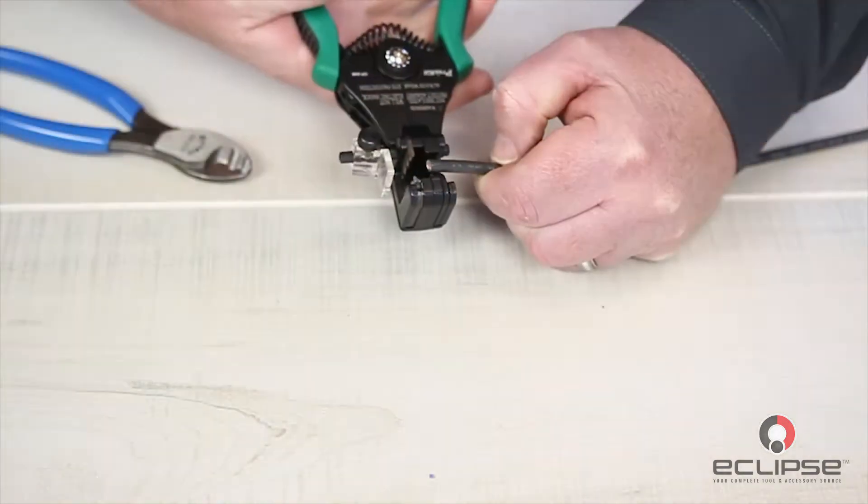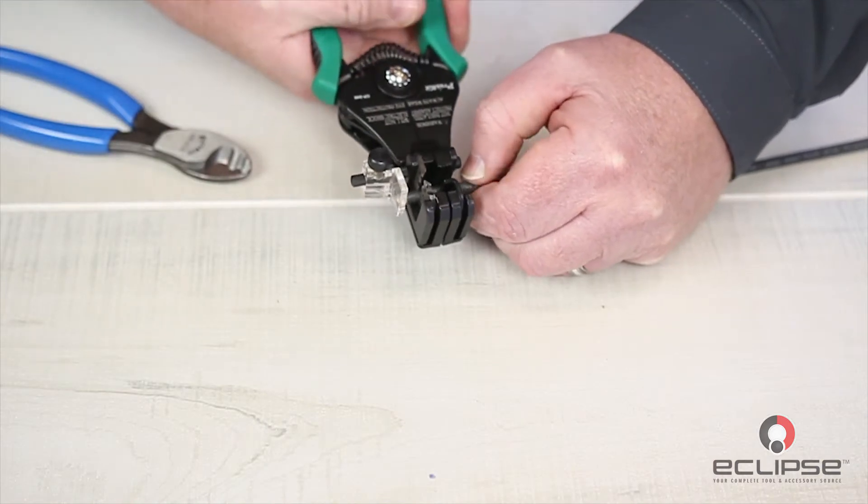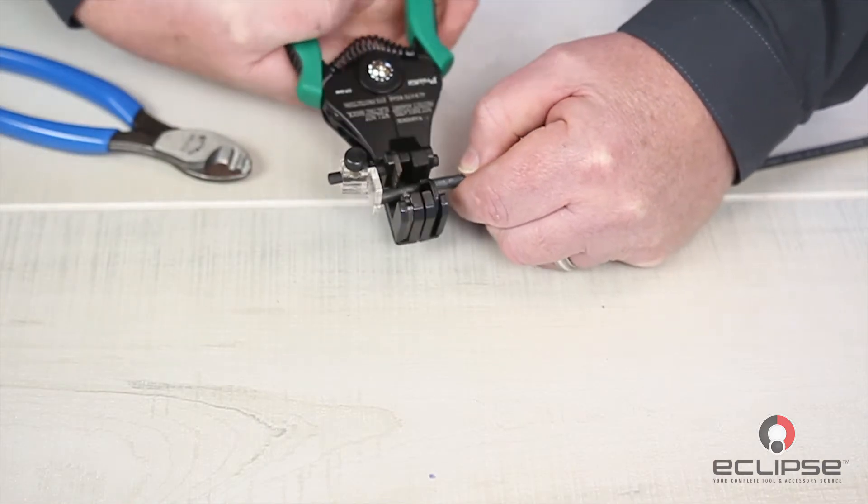Insert the cable into the 10 gauge cavity. Now, strip the cable, removing the outer jacket.